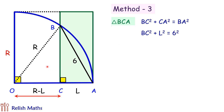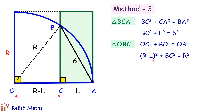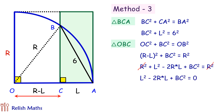Now for triangle OBC: applying Pythagoras theorem gives OC² + BC² = OB². Putting OB = R and OC = R minus L, we get (R − L)² + BC² = R². Expanding using (A − B)² gives R² + L² − 2RL + BC² = R². The R² on both sides cancels, leaving L² − 2RL + BC² = 0.